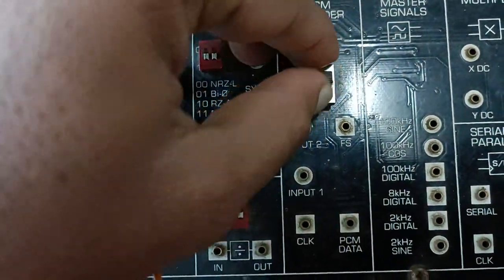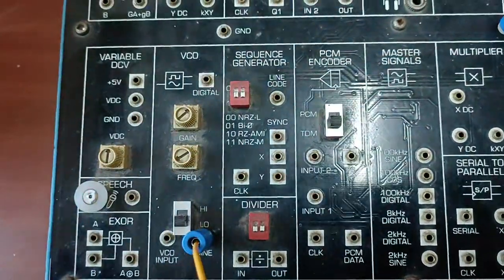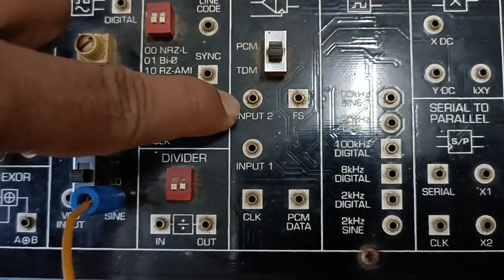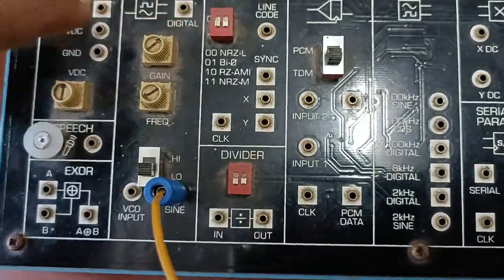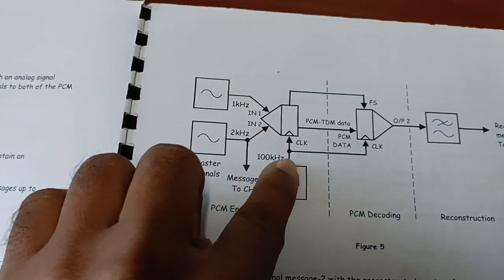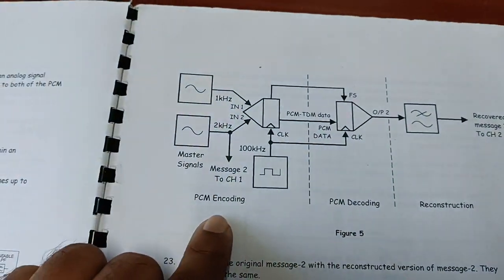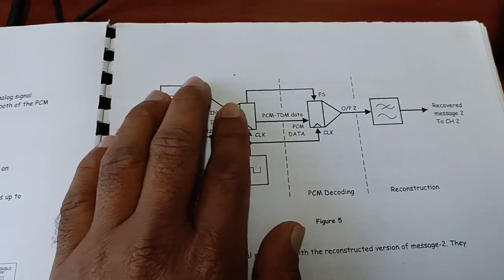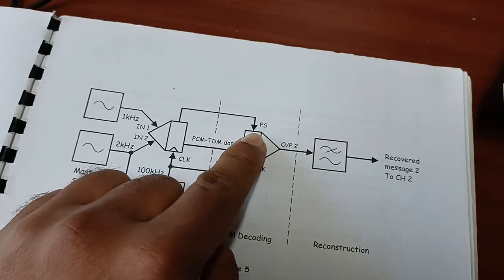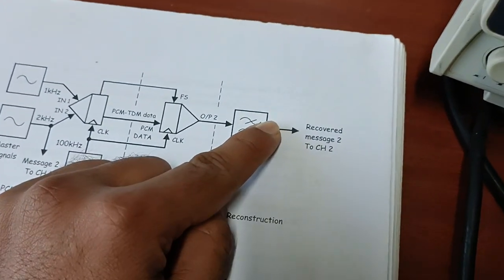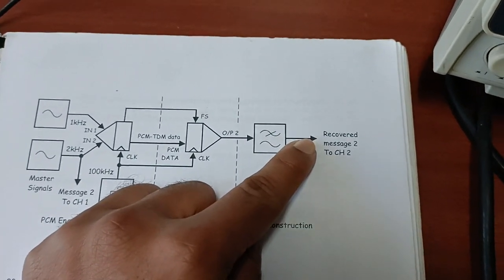When the switch is moved from PCM to TDM, this block works as a TDM encoder. There are only two inputs available — input one and input two. In MATLAB you could use multiple inputs like three, four, or five, but here we use two. We combine them using the TDM block with a clock frequency of 100 kilohertz. The TDM decoder output goes to a low pass filter input, where we can reconstruct the signal.